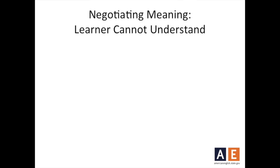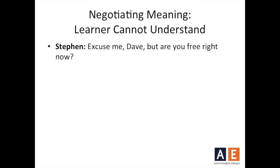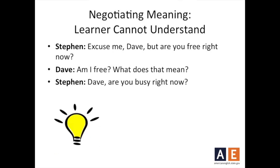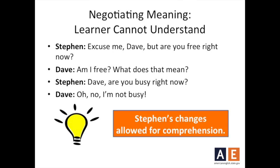There are many situations in which a learner might not understand the person that is talking to them. For example, let's pretend that Dave is the learner and I say to him, 'Excuse me, Dave, but are you free right now?' Dave responds with, 'Am I free? What does that mean?' Clearly, Dave is indicating that he doesn't quite understand what Stephen has said. So Stephen modifies his question and instead asks, 'Dave, are you busy right now?' Dave responds, 'Oh, no, I'm not busy.' In this example, the modifications that Stephen made allowed for Dave's comprehension of the question. In other words, Stephen and Dave had to negotiate with one another in order to arrive at meaning.